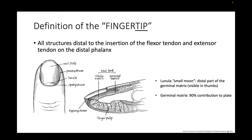It's probably best to start by defining the fingertip — essentially all structures distal to the insertion of the flexor and extensor tendon on the distal phalanx. The hyponychium is the most distal portion at the end of the nail bed. The sterile matrix and germinal matrix make up the nail bed, and the germinal matrix contributes to 90% of nail plate production. The lunula, that small moon at the proximal aspect, is the visible part of the germinal matrix.